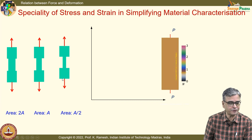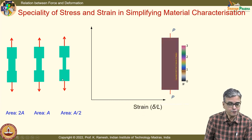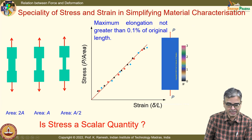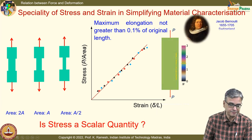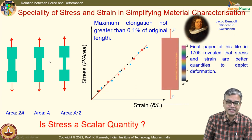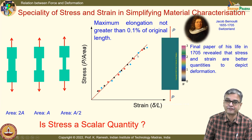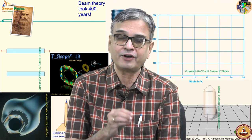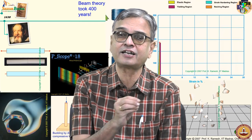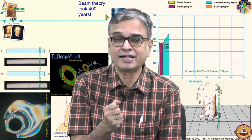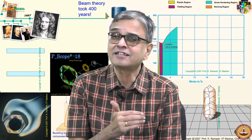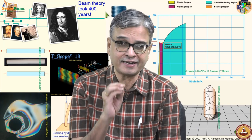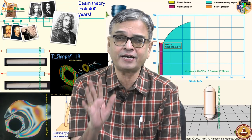For the same three different cross sections, if you plot the graph differently — change in length divided by original length versus force divided by area — for all three different cross sections you get only one graph. You should also understand this is restricted to only 0.1 percent of original length.